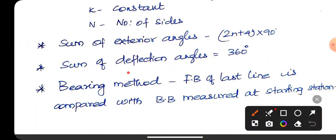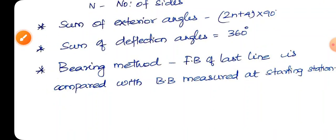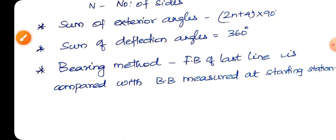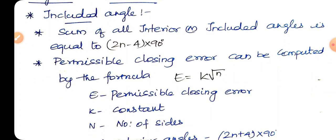Deflection angles: deflection angle is equal to 360. Bearing method: fore bearing of the last line compared with the back bearing of the starting station. Last first fore bearing, back bearing, 180 degrees. Sum of the angular measurements for closed traverse.